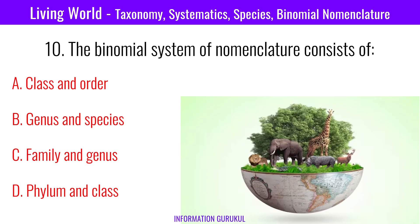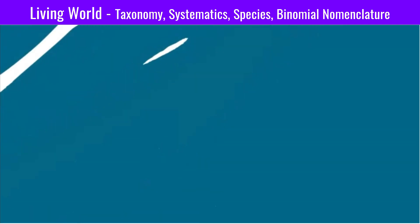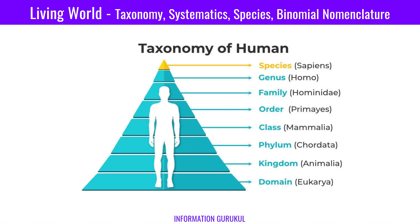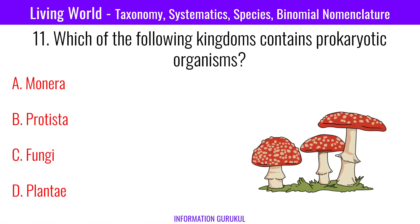The binomial system of nomenclature consists of? Genus and species. Which of the following kingdoms contains prokaryotic organisms? Monera.